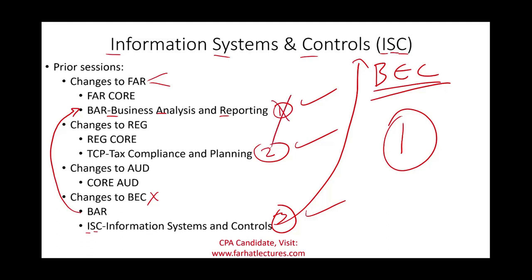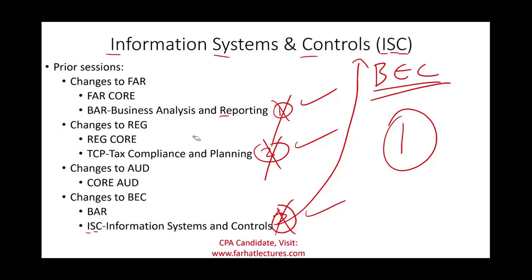You could also avoid the specialization altogether if you complete the BEC section of the old exam before 2024. If you finish BEC before 2024, you don't have to take any specialization — you just need to take the three cores: FAR core, REG core, and the audit core. I'll have strategies in a separate recording; for information on FAR, REG, and audit, please see the other recordings in this playlist.